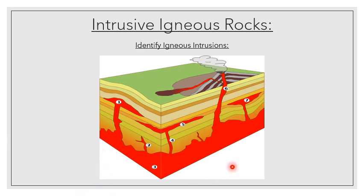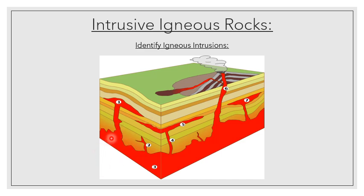Way down at the bottom, we've got our magma chamber, which feeds our batholiths, and from the batholiths we actually start feeding pipes. Here we've got a pipe moving up into a lapolith, another pipe going to a volcano, a pipe that runs into a sill, and another pipe that runs into a lacolith.